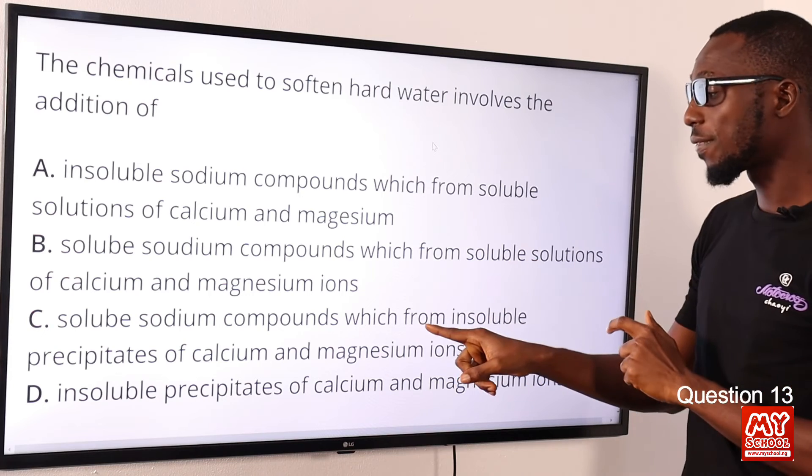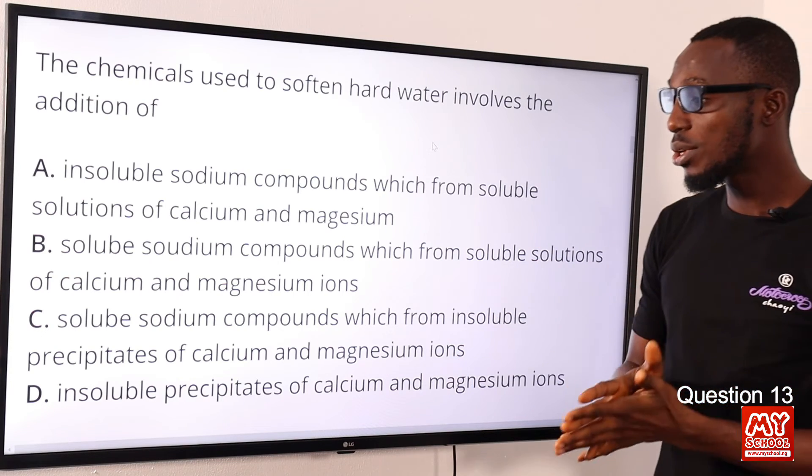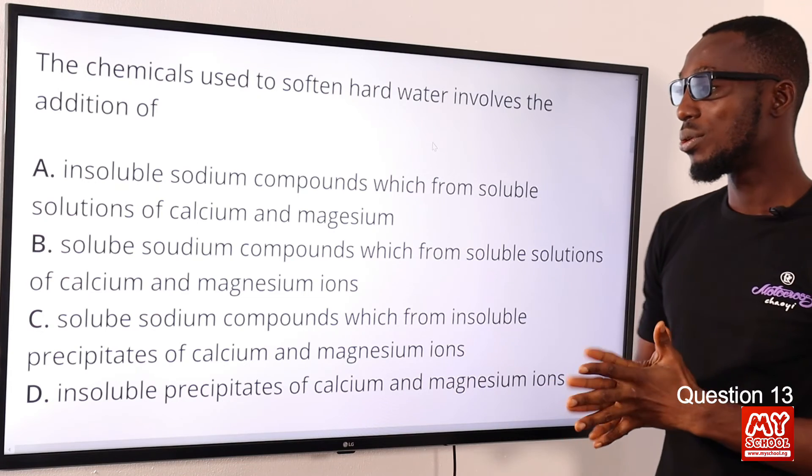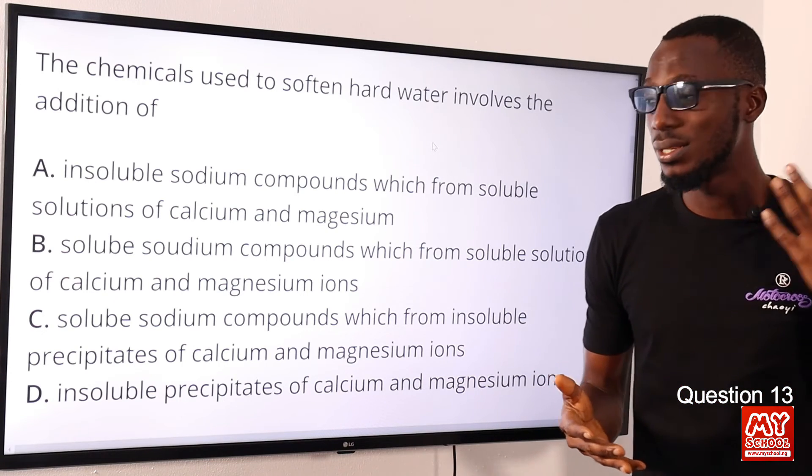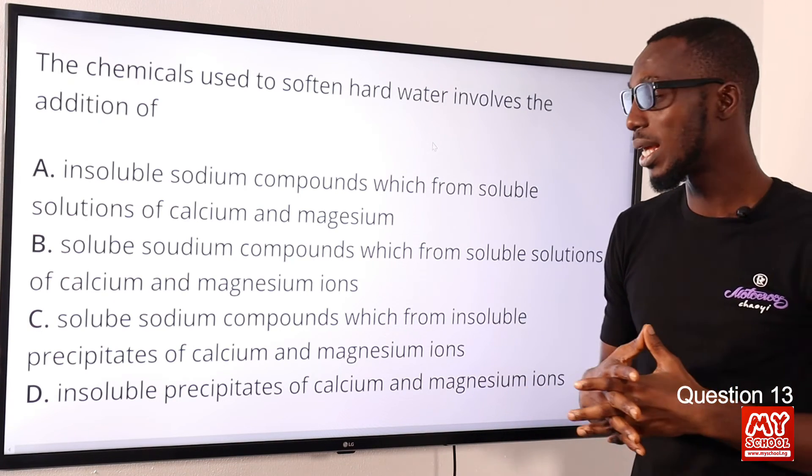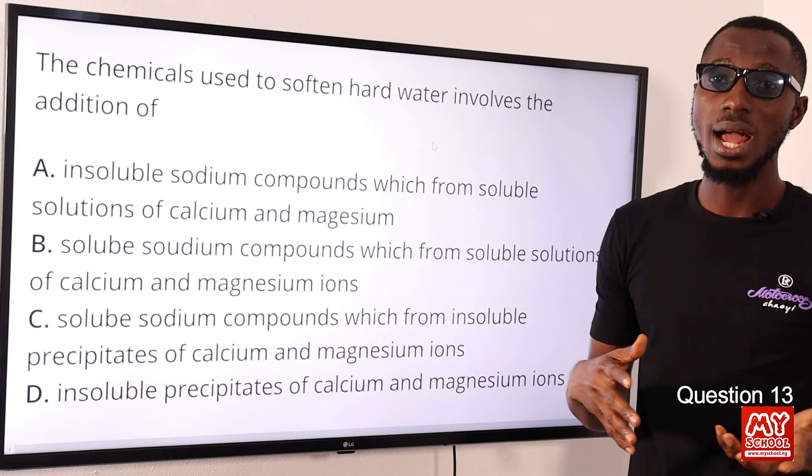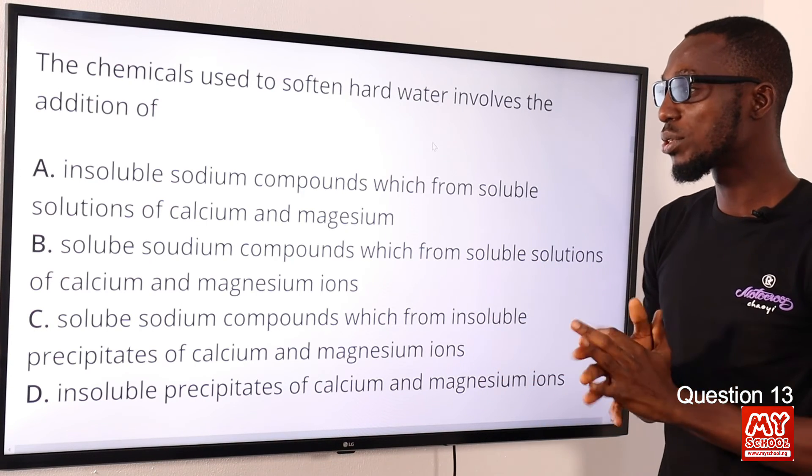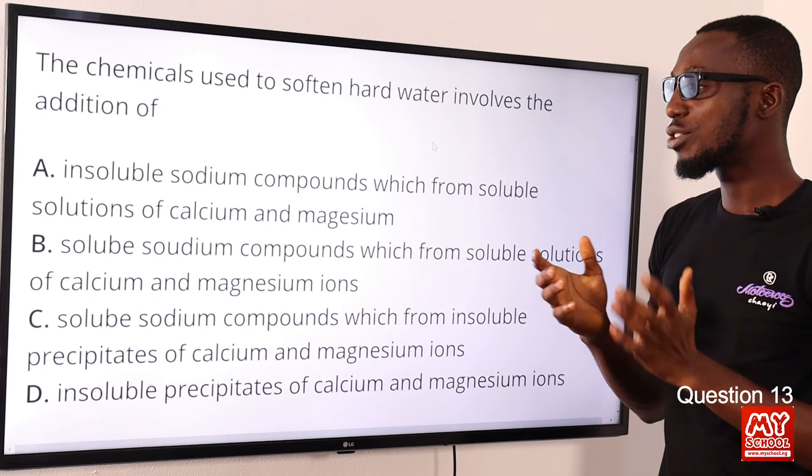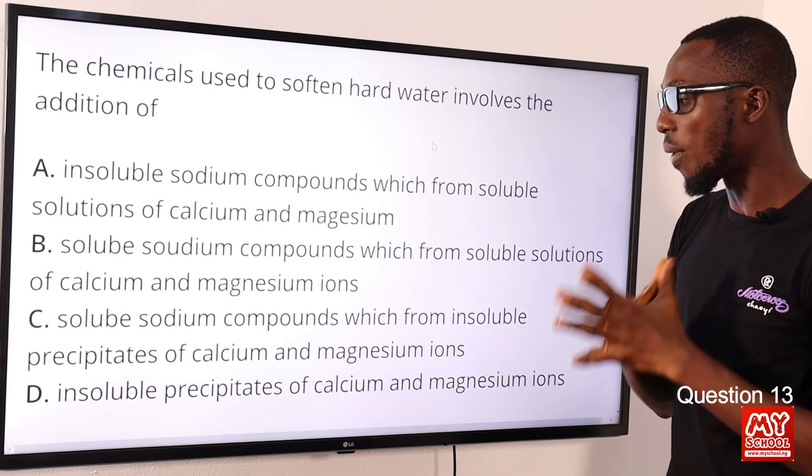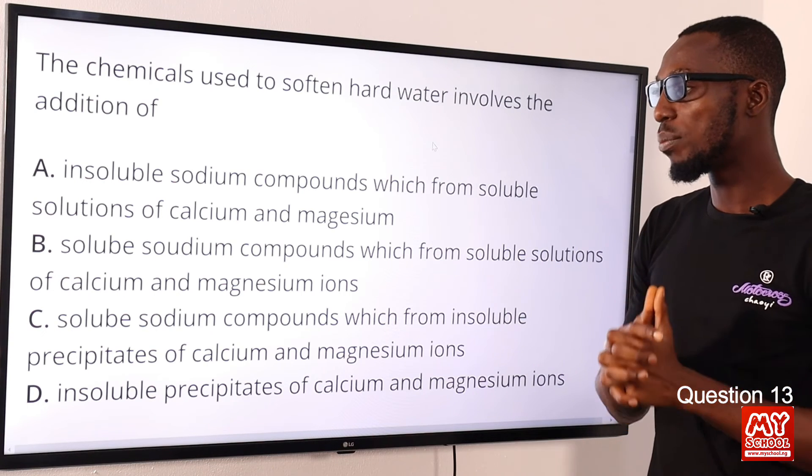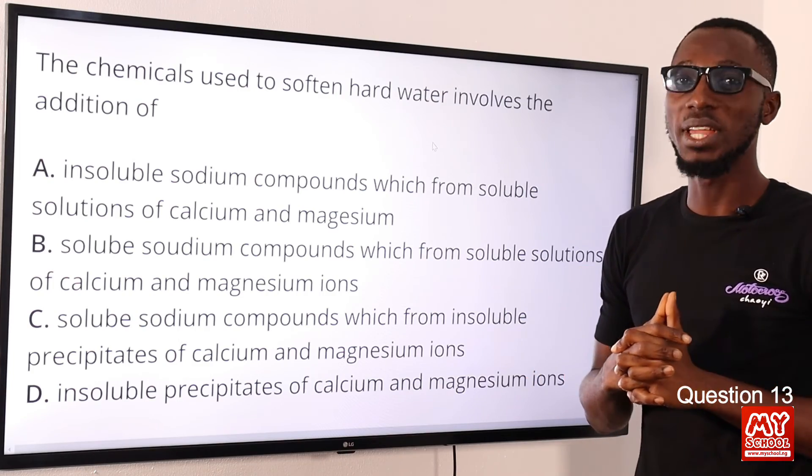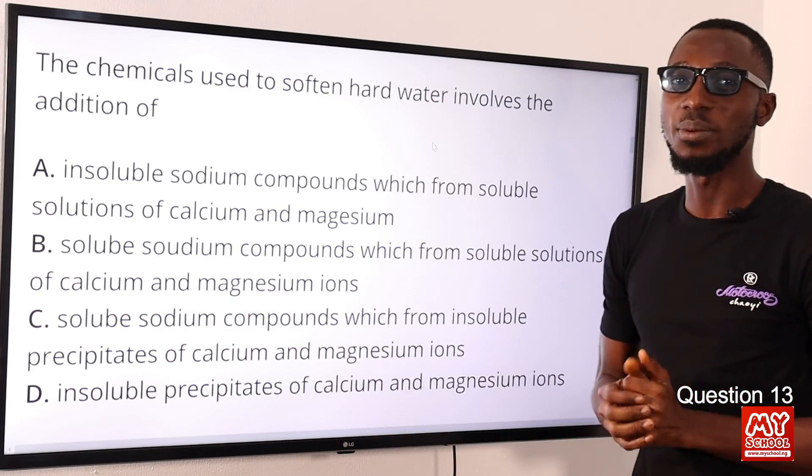How do we remove this calcium and magnesium ion? You use all soluble sodium compounds, which form insoluble precipitates of calcium and magnesium ions. You can be looking at zeolite, washing soda, caustic soda, and what have you. The correct option here is option C: we are using all soluble sodium compounds which form insoluble precipitates of calcium and magnesium ions. So option C is the correct option.